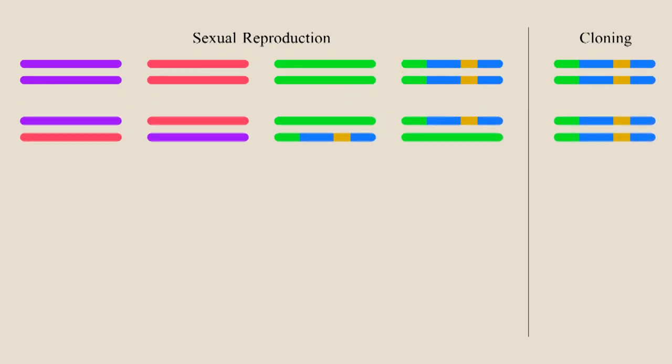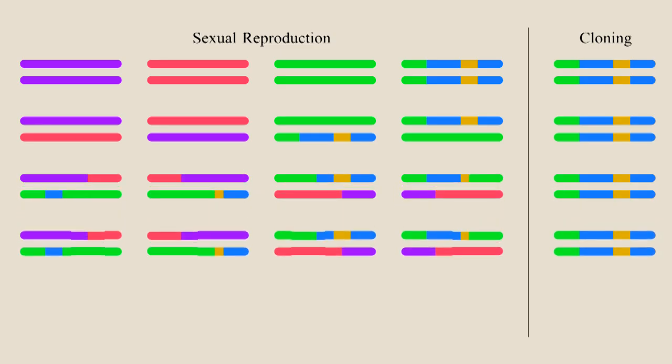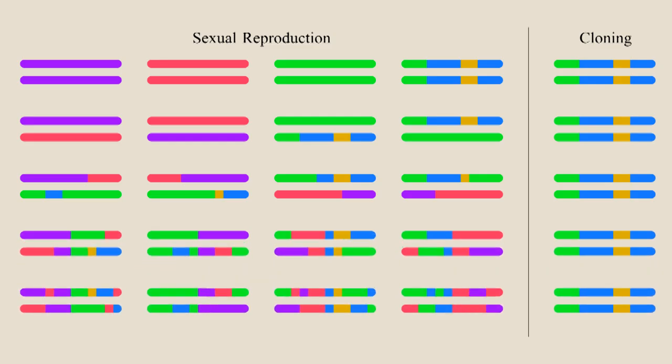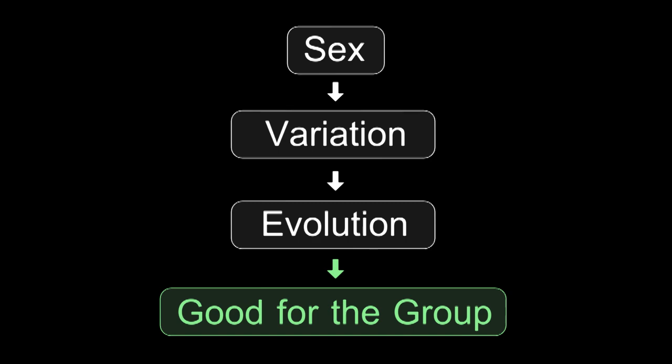Sex is about mixing genes. It creates variation and variation drives evolution. With more variation, with more differences in the population, natural selection can pick out better, more adaptive genes. Sex leads to variation, which leads to evolution, which is good for the population. It's good for the group as a whole.